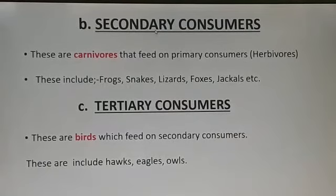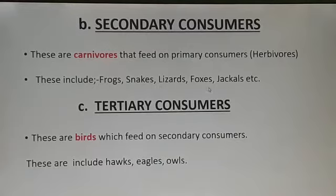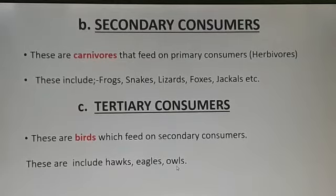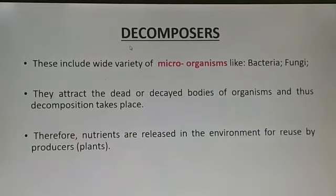Secondary consumers are the carnivores or flesh-eating animals which feed on the primary consumers. Frogs, snakes, lizards and foxes are the secondary consumers. Tertiary consumers — birds are the tertiary consumers which feed on the secondary consumers. Hawks, eagles and owls are the tertiary consumers.